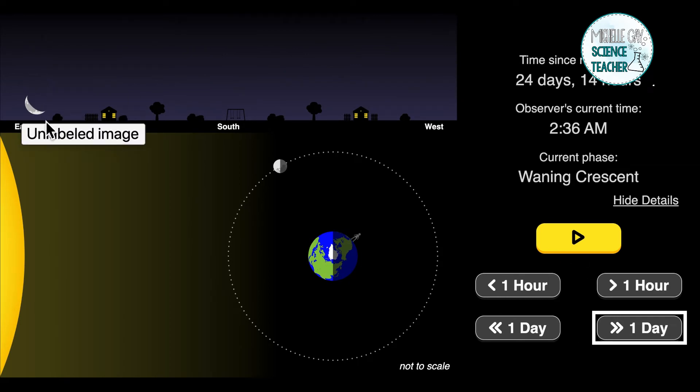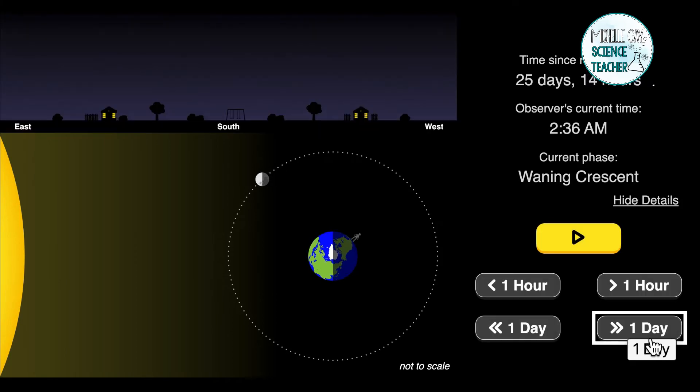Now look at the moon. Here we have a waning crescent. Now that we have a waning crescent, what do you think is going to come next in the phases of the moon?